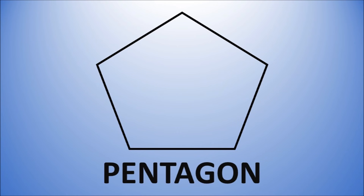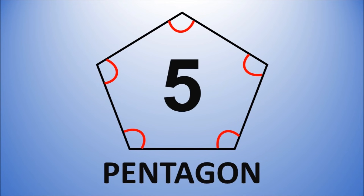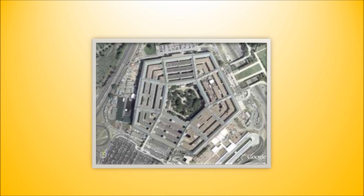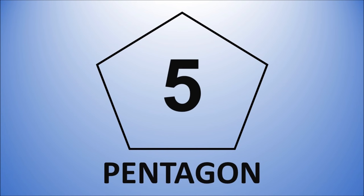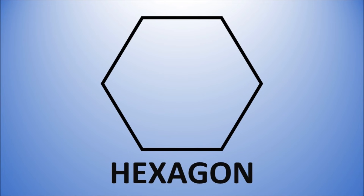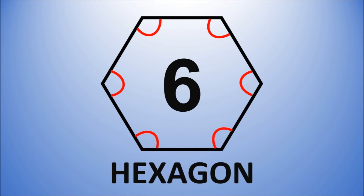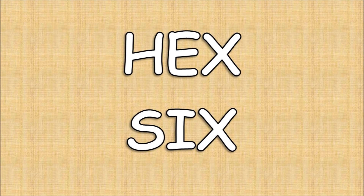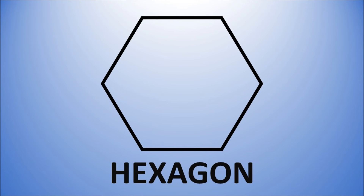A pentagon has five sides and five angles made from straight lines. The Pentagon building might come to mind. A hexagon has six sides and six angles made from straight lines. Hex and six both have an X — that's right, a hexagon has six sides.